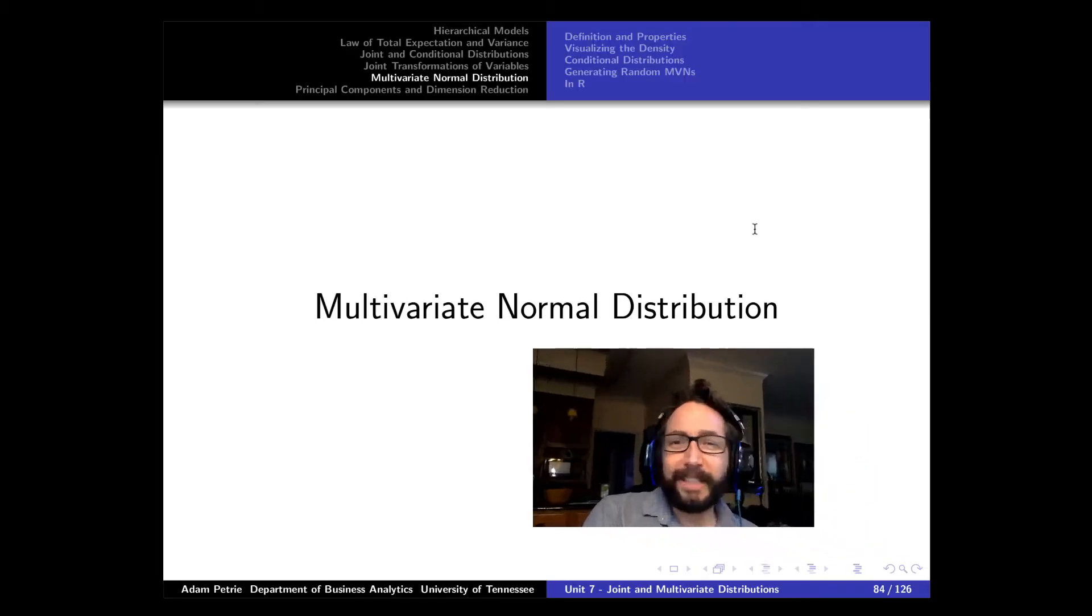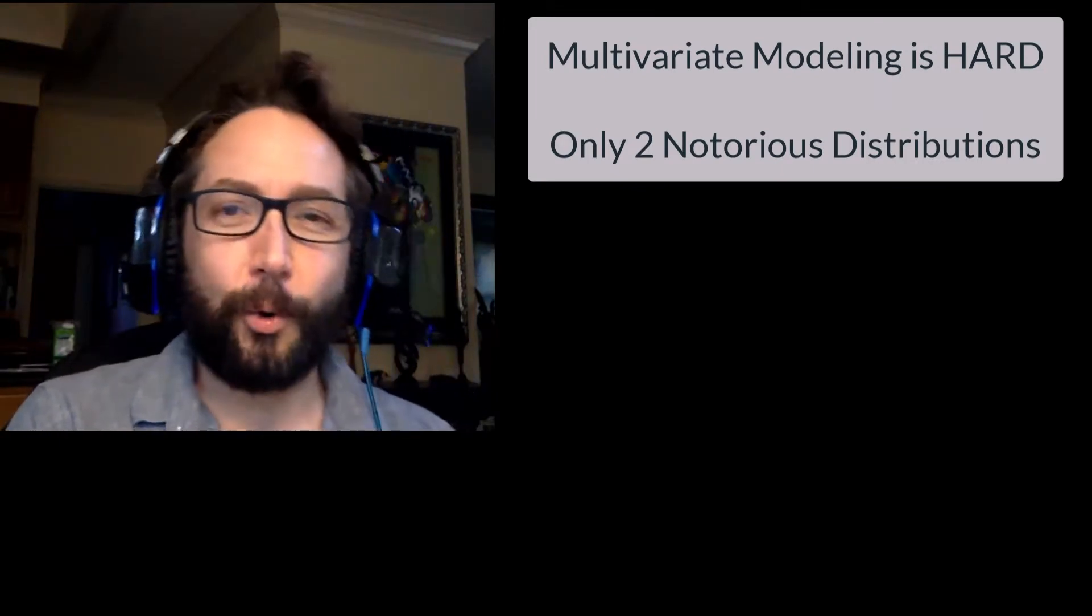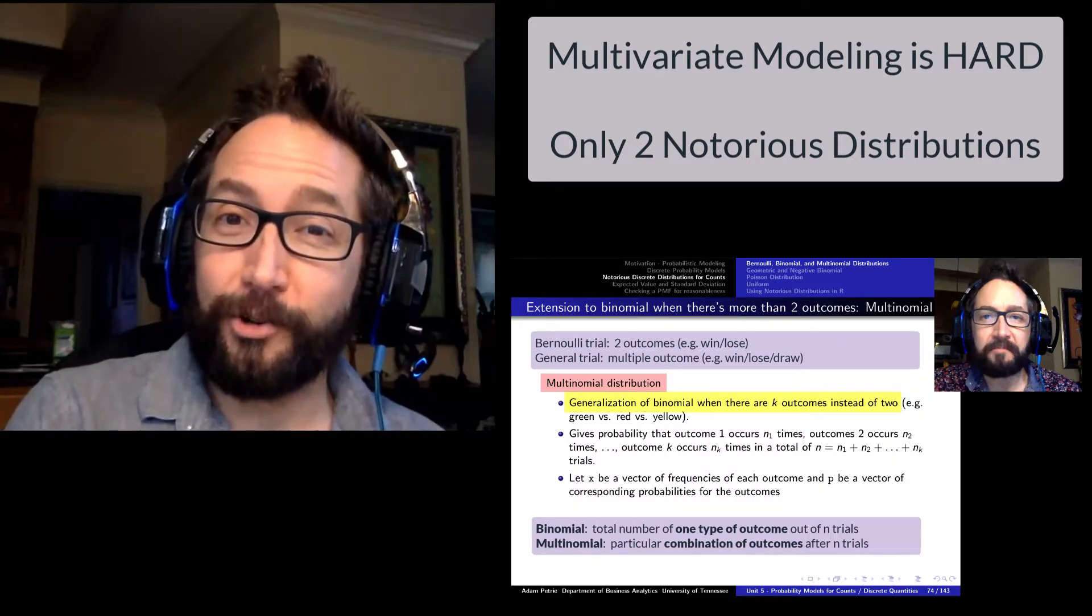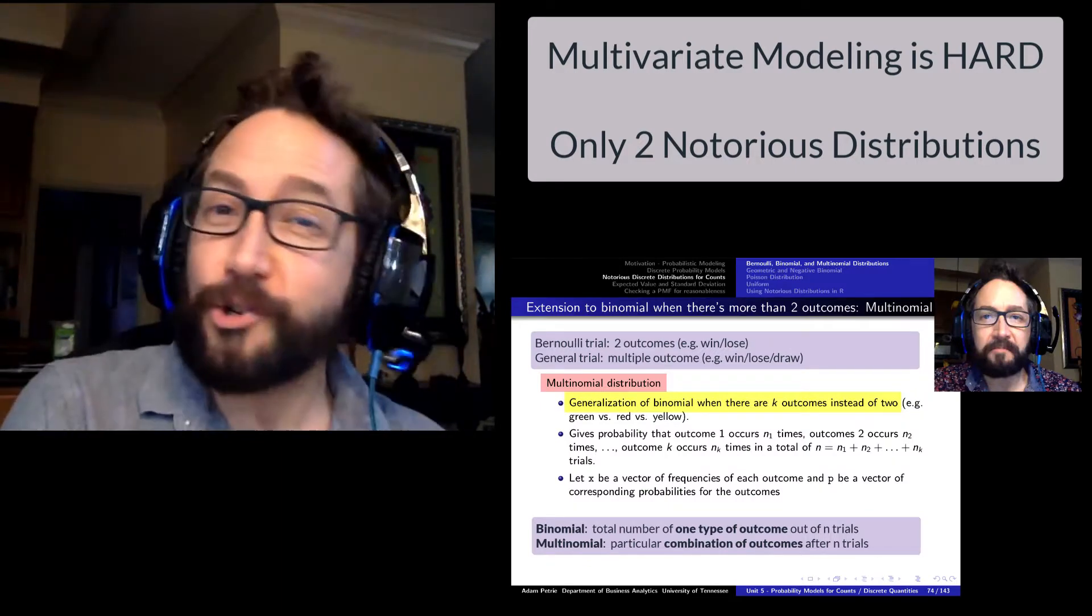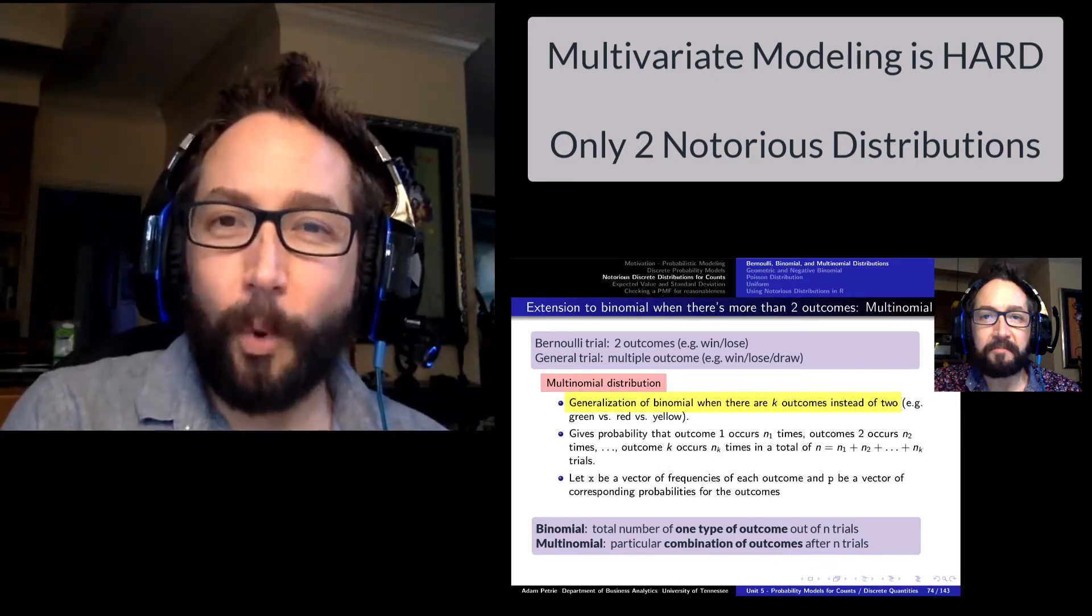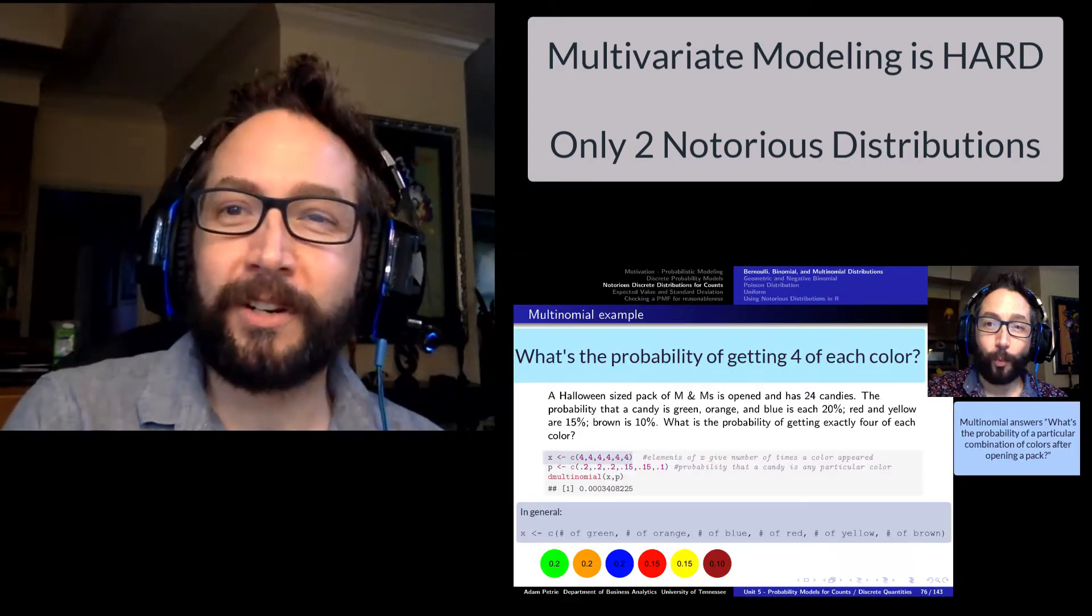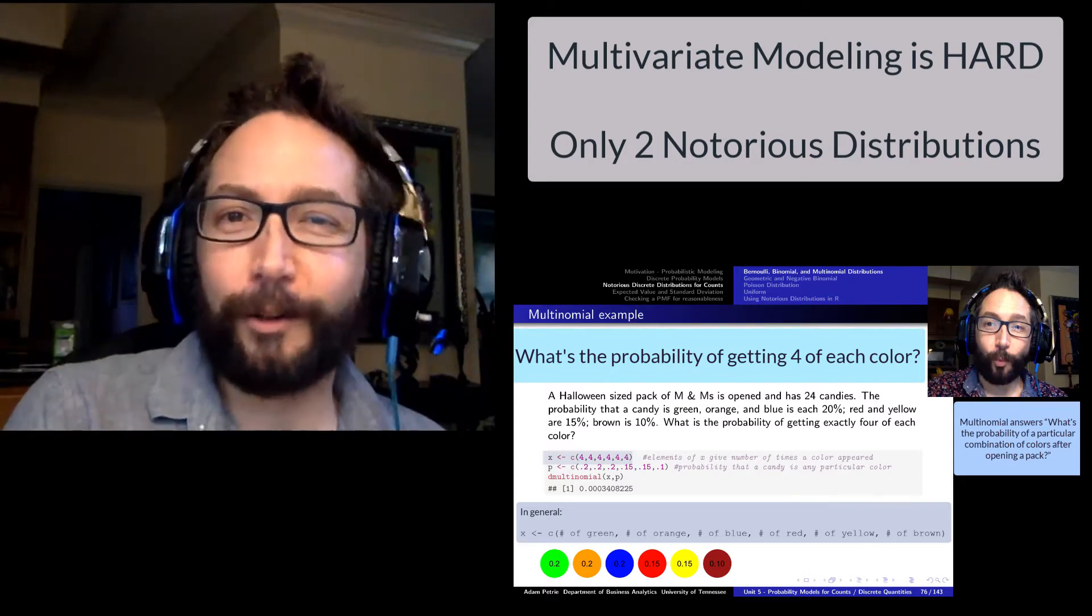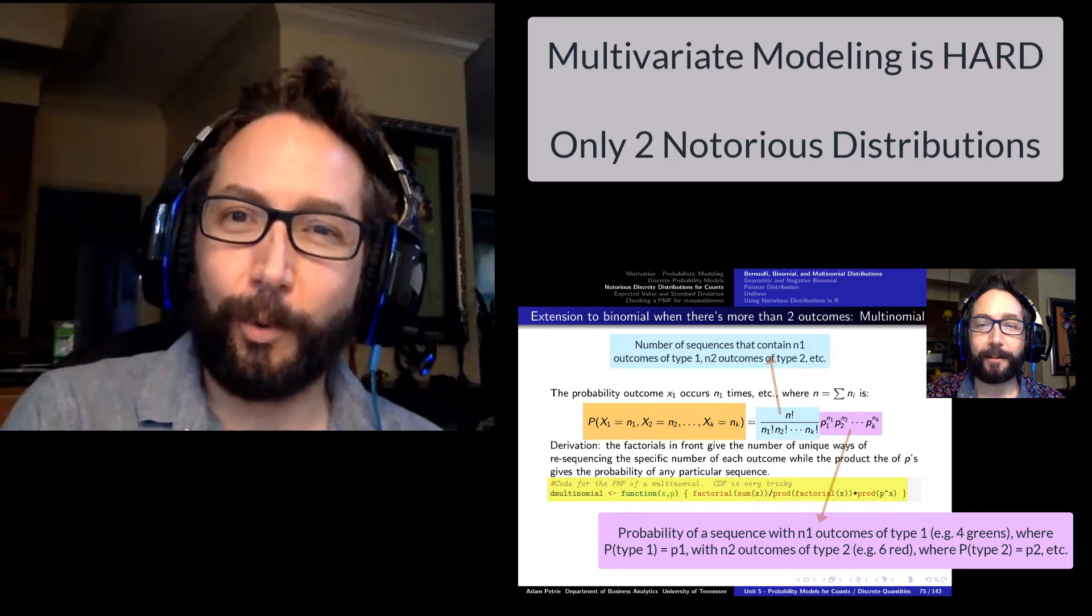There's really only two distributions in the multivariate notorious zoo. We've talked about one, the multinomial distribution, which was about the probability of finding a particular combination of outcomes when we had a sequence of independent trials, each with many possible outcomes. We used the multinomial distribution to talk about the probability of getting exactly two of each color when we open up a pack of M&Ms. It involved a lot of factorials but wasn't too difficult to work with.